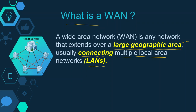Here we can see in this diagram that this is the headquarter of a company and these are its branches A, B, C, D. All these branches have their own LANs, and these LANs are connected to the headquarter LAN through the WAN. The headquarter may be in one city and the branches may be in different cities, or far away by tens of dozens of kilometers — that is what makes it a WAN.